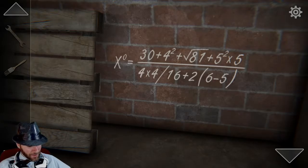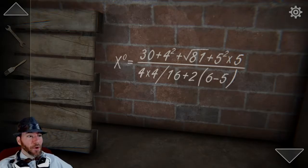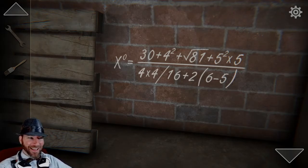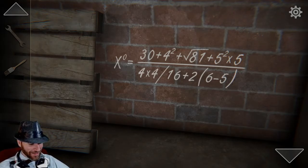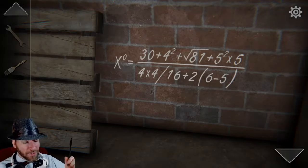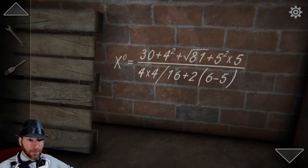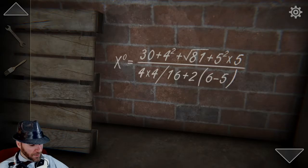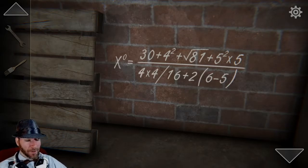6 minus 5. Who's gonna do this with me? Let's simplify it a little bit. We got 30 plus 16 plus 9, plus you have to do exponents — so it's 25 times 5. 25 times 5 is 125. So there's the top.